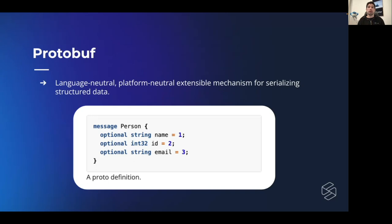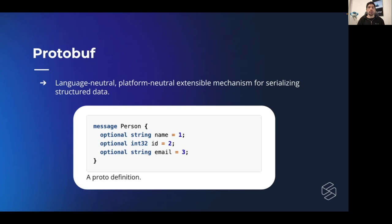In this case we define a person who has a name, an ID, and an email. Once we learn how to define the proper message, we can auto-generate that message in any programming language that supports protocol buffers — and Dart is one of them. We'll have a single definition of our models and services, reused both in the client and in the server, so we don't have to write those classes twice.